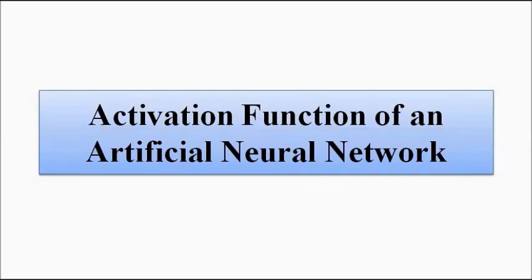Hello friends, welcome to Engineering Tutorial. In the previous videos on neural networks we discussed important parameters and terms such as input/output hidden nodes, weights, bias, and activation function. We got to know that the activation function is used to determine the type of output we want, and each node or neuron in the neural network has an activation function associated with it. In this video we are going to discuss activation functions specifically, and the different types used in designing artificial neural networks.